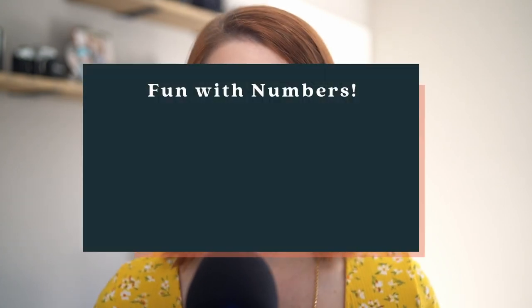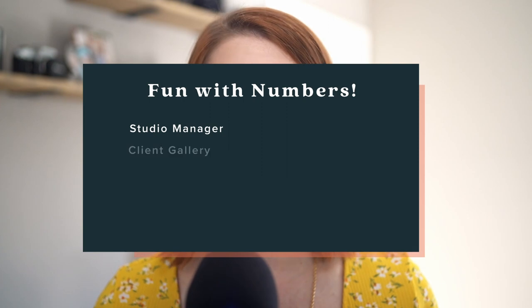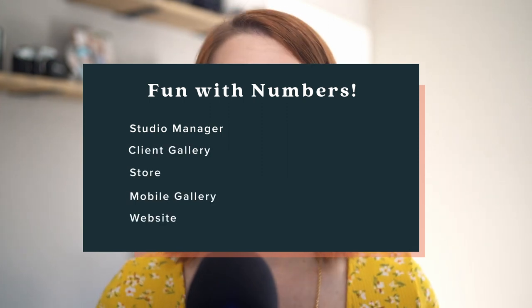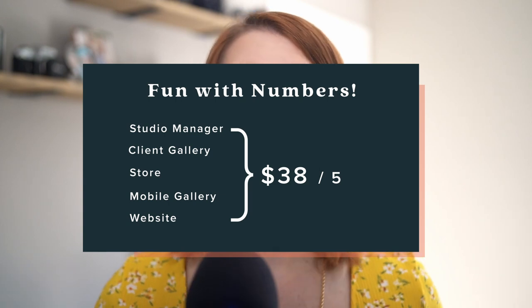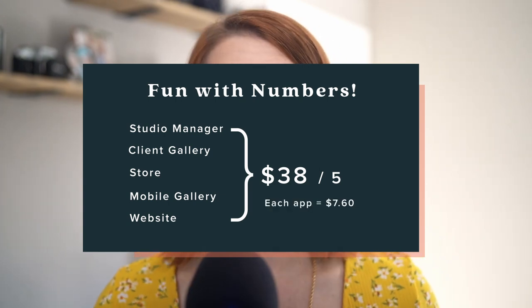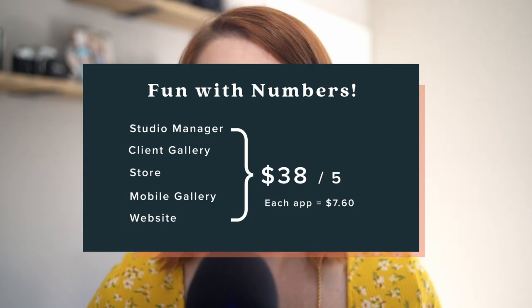Let's do some very basic price deconstruction of that popular $38 tier. If all of the included apps — Studio Manager, Client Gallery, Store, Mobile Gallery, and Website — are weighted equally in cost, each app would break down to costing $7.60. Each app isn't going to be weighted the same because each has different development needs, but this is my hypothesis and we're playing internet science right now. I'll have more to say when wrapping up this category, but right now we are moving on to CloudSpot.